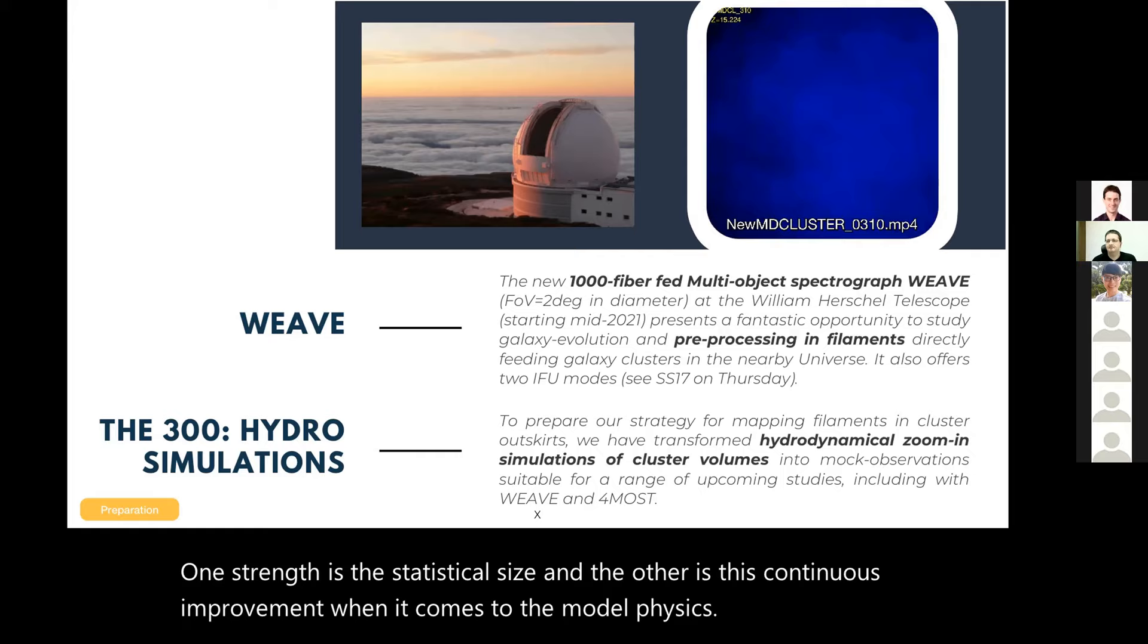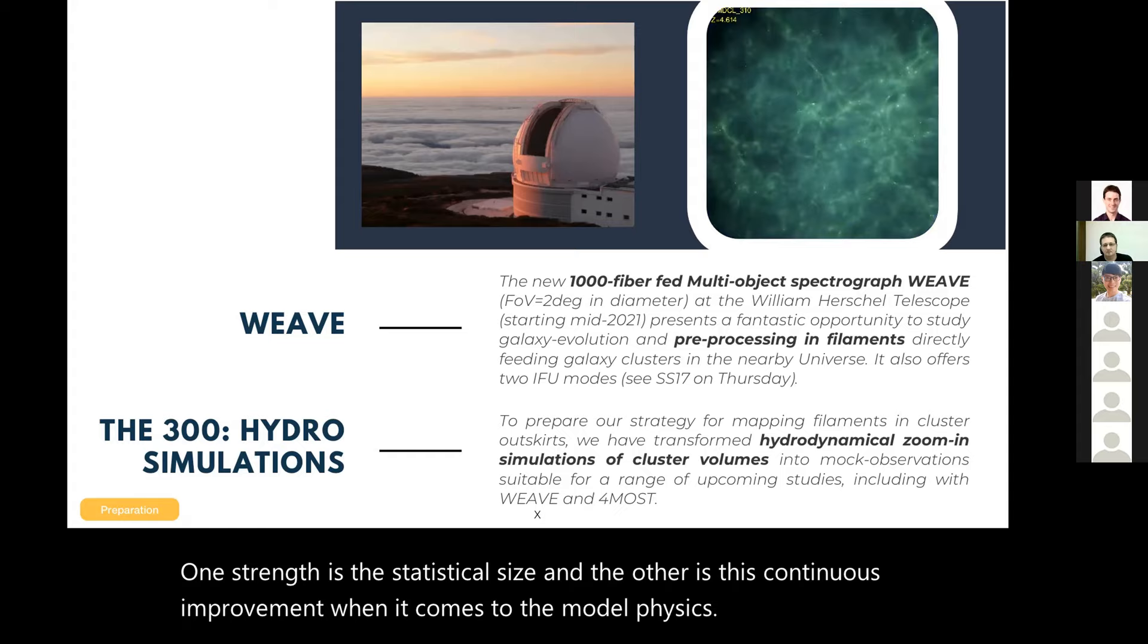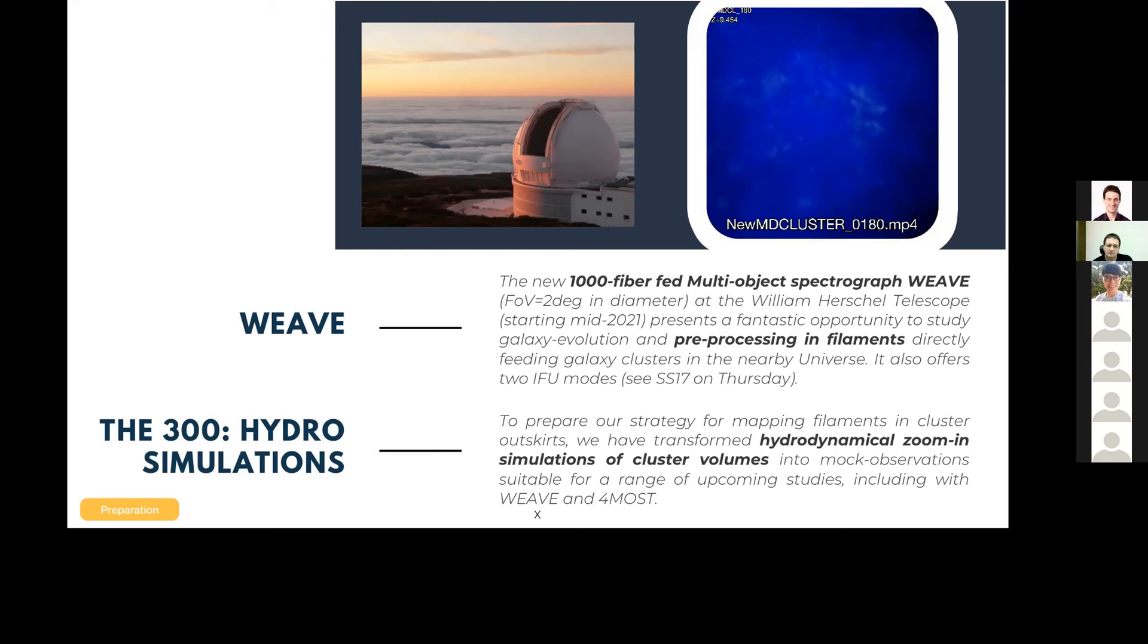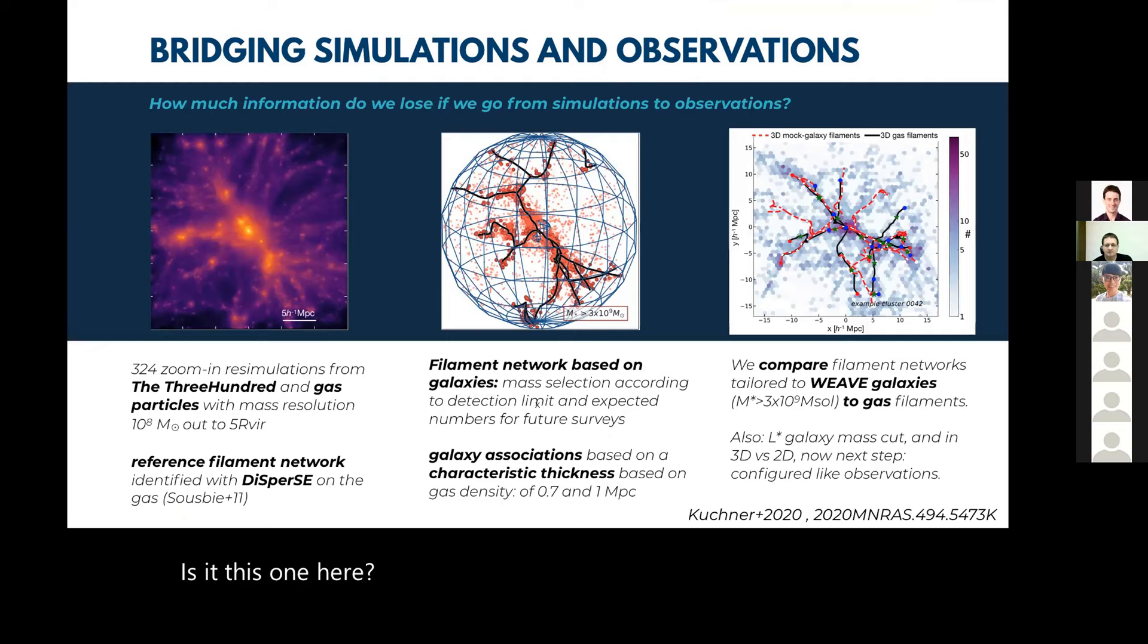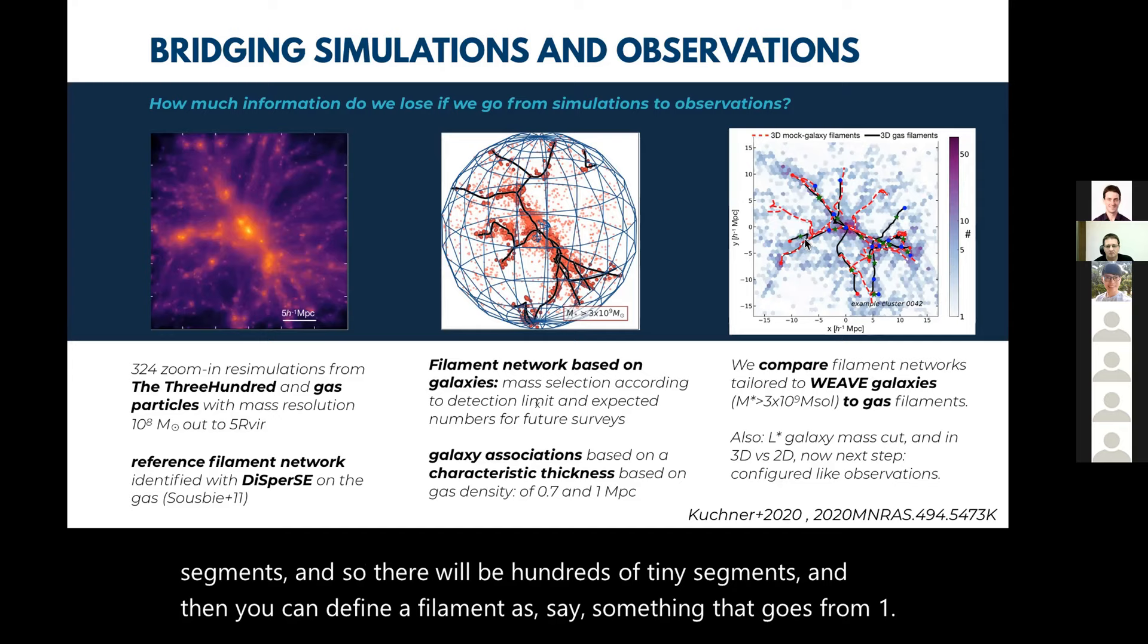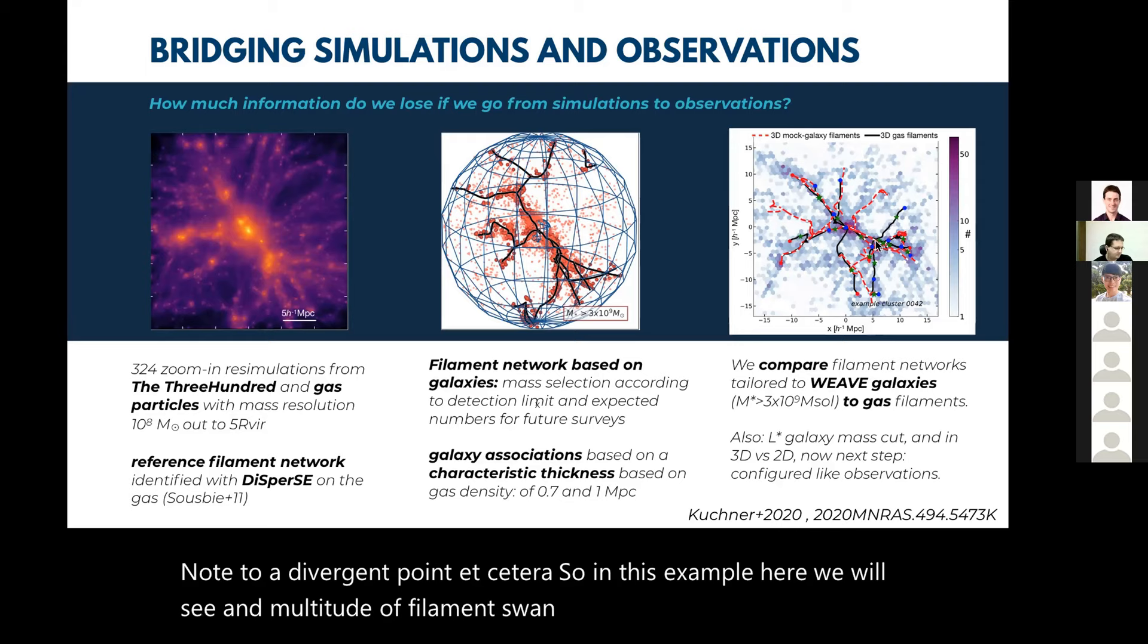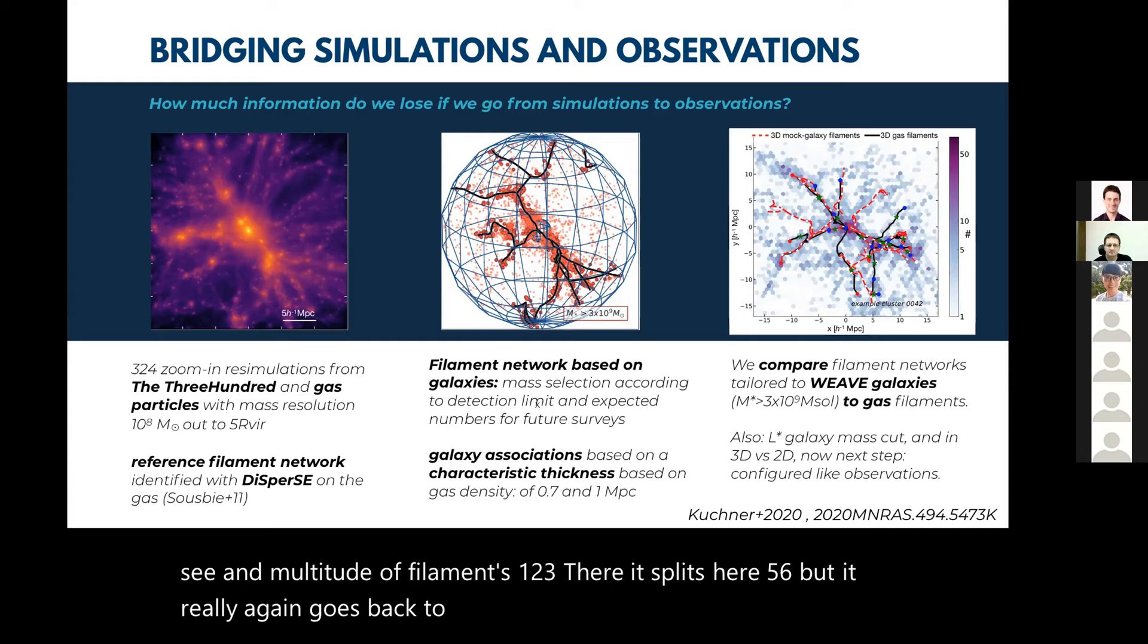Hi, very nice job. So I may be a little bit sidetracking. Can you go to that DISPERSE slide where you show the filament finder results, maybe demonstrate? Yeah, is it this one here? Yes. So suppose in the rightmost panel, does this filament finder find just one filament or separate filaments? Okay, so the filament finder actually gives you a range of little segments. There will be hundreds of tiny segments. Then you can define a filament as something that goes from one node to a divergent point, etc. In this example here we will see a multitude of filaments - one, two, three, there it splits here, five, six - but it really again goes back to how do you define a filament? It does not give you one, but this would probably be yeah, one here.